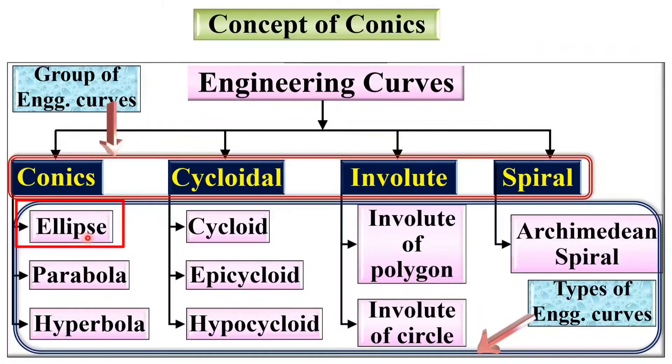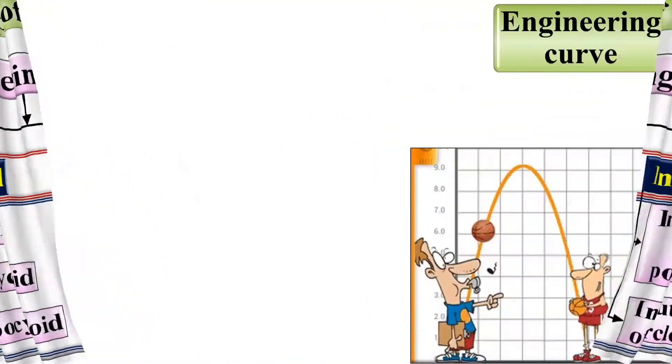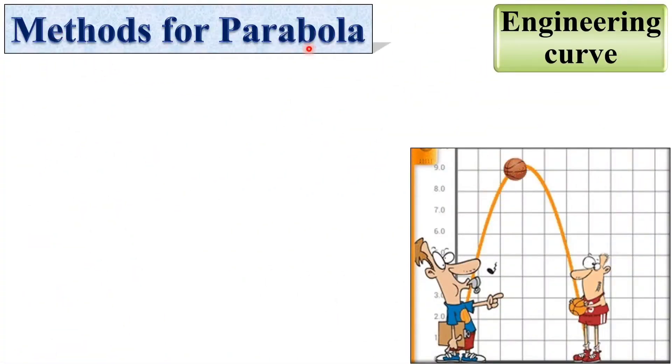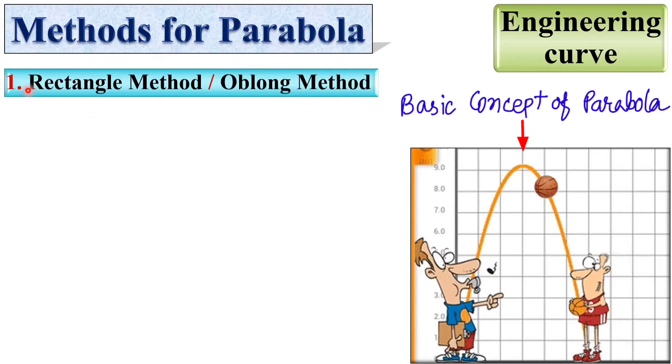So far we have discussed the different methods of the ellipse. Now it is done for the different methods of parabola. Let us start with the different methods for the parabola, but before that look at the concept of the parabola. The path of the pole is actually a parabola.